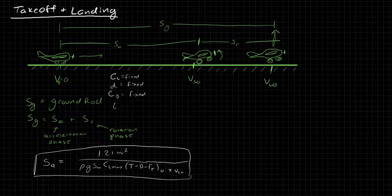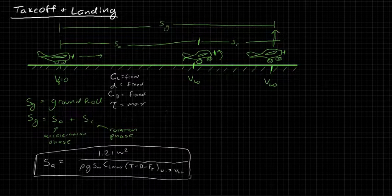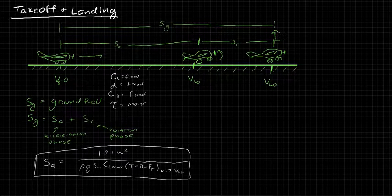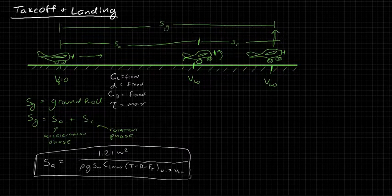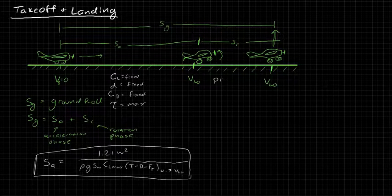And actually, during the acceleration phase, throttle is generally at its maximum setting. So the throttle setting is also fixed. And we were able to come up with something nice for that. Now, during the rotation phase, the rotation distance is really mostly a function of the pilot.